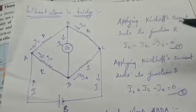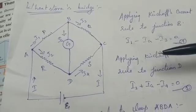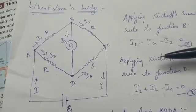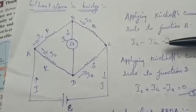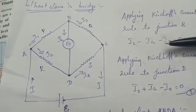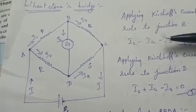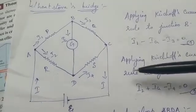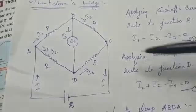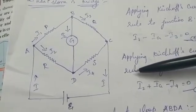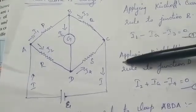Good morning. In today's video we are going to see about the Wheatstone bridge. This is the application part of Kirchhoff's rule, which we learned about yesterday — the first rule (current rule) and the second rule (voltage rule). We have to apply Kirchhoff's rule here. In this Wheatstone bridge, it is used to determine the unknown resistor; there are four resistors connected.